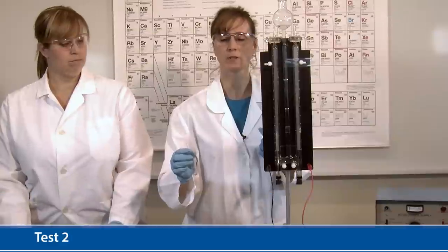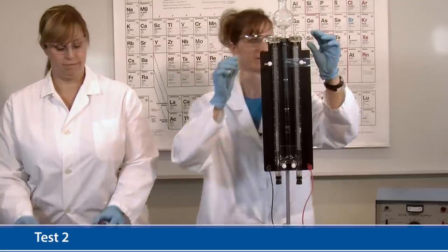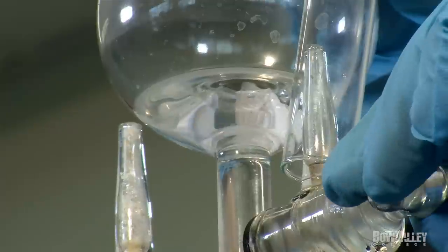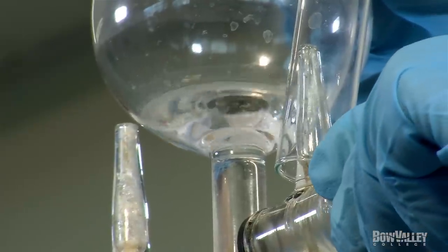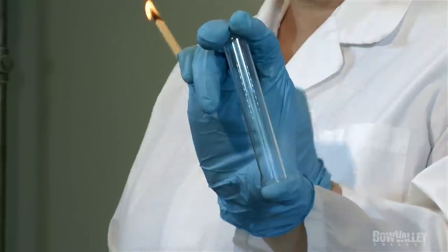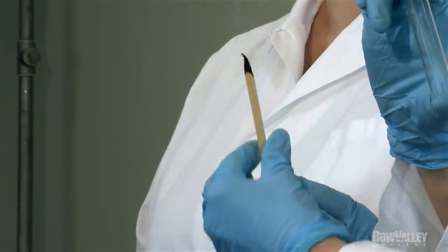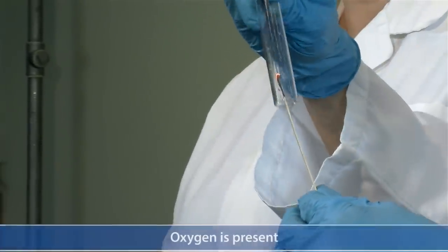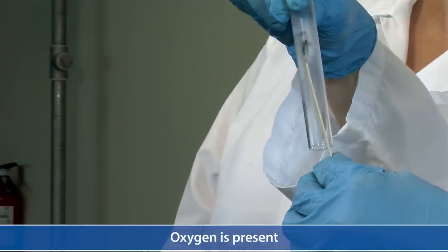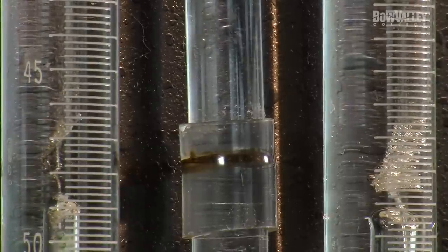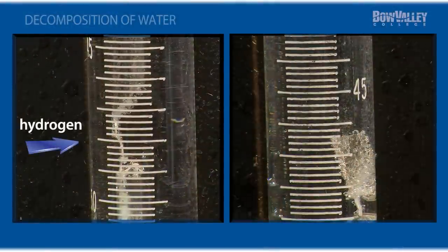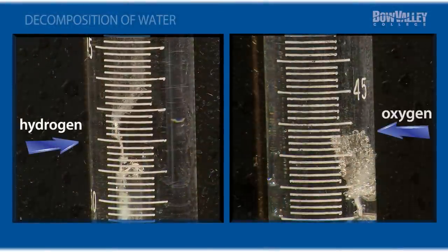I will use a new test tube to collect the other gas. We now know that the tube with more gas contained hydrogen, and the side with less gas contained oxygen.